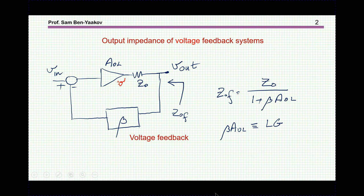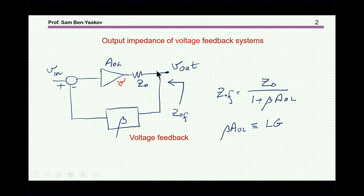Let me start with a short discussion of the output impedance of a feedback system. Here we have a closed-loop system — this is the plant, the amplifier — with a feedback loop, summing junction, and input voltage. It is well known that the output impedance in closed loop of a voltage feedback system equals the impedance without feedback over one plus βA open loop, where βA open loop is the loop gain of the system.